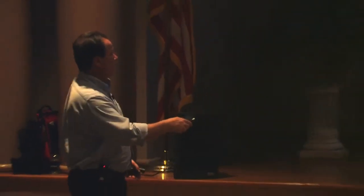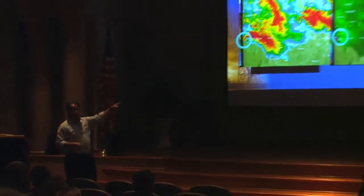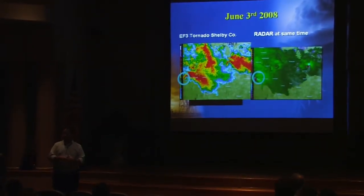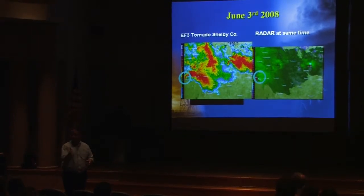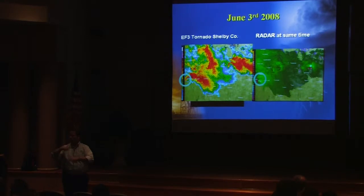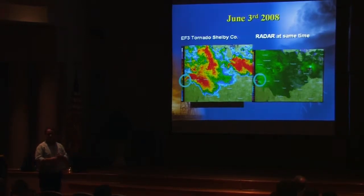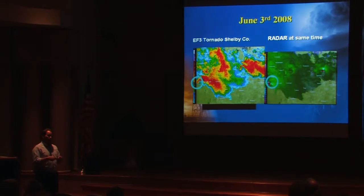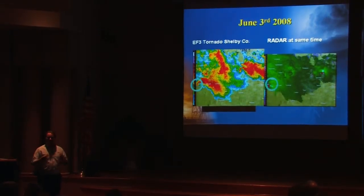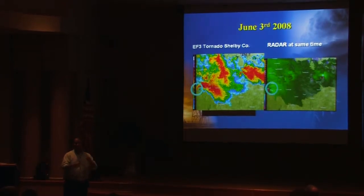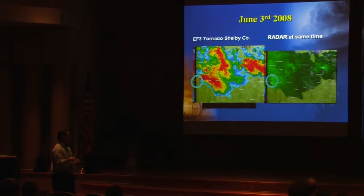When you're looking at hook-shaped echoes like you see here, you want to use the storm relative velocity data. So again — base velocity for straight-line wind, storm relative velocity for rotation. It'll do a better job of identifying the strength of the rotation. The reason is that we're literally subtracting out the forward motion of the storm, so you're getting more of the pure rotation left behind in the information.